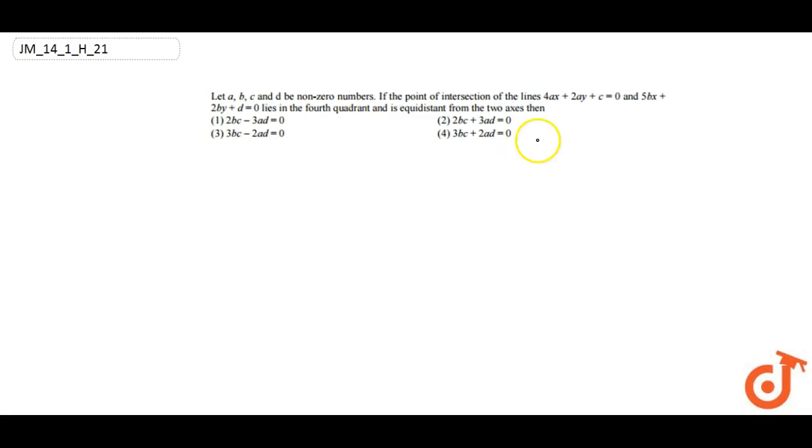This question is from chapter straight lines. In this question we have given these two lines which intersect in the fourth quadrant and is equidistant from the two axes. Point of intersection is equidistant from the two axes, so first let's draw the axis.